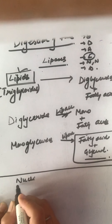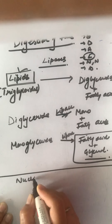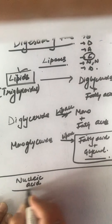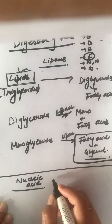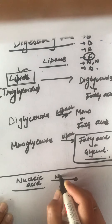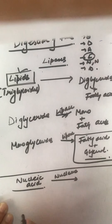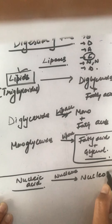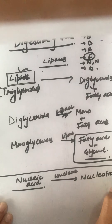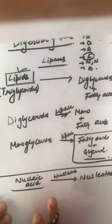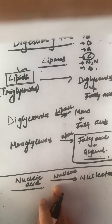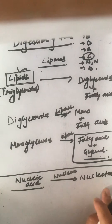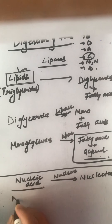Moving to the digestion of nucleic acids: DNA and RNA are acted upon by nucleases and converted to nucleotides.